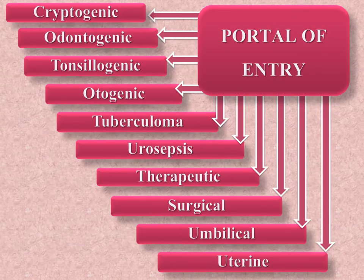The portal of entry may be in any organ or tissue. According to these features, the following types of sepsis exist: cryptogenic sepsis (portal of entry unknown), odontogenic (tooth), tonsilogenic (tonsils), otogenic (ear), urosepsis (urinary system), therapeutic (digestive system and respiratory tract), surgical (medical manipulations), uterine sepsis (obstetric manipulations), and umbilical sepsis (in newborns).